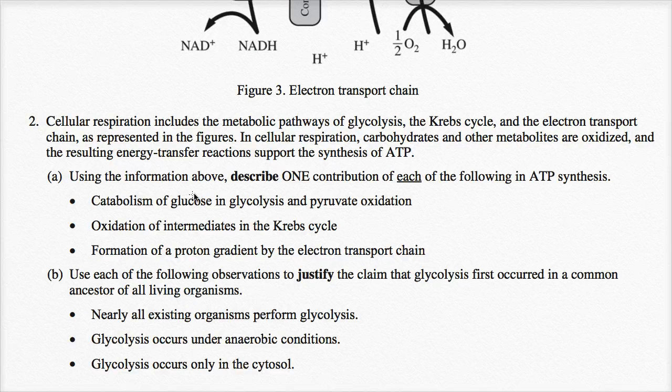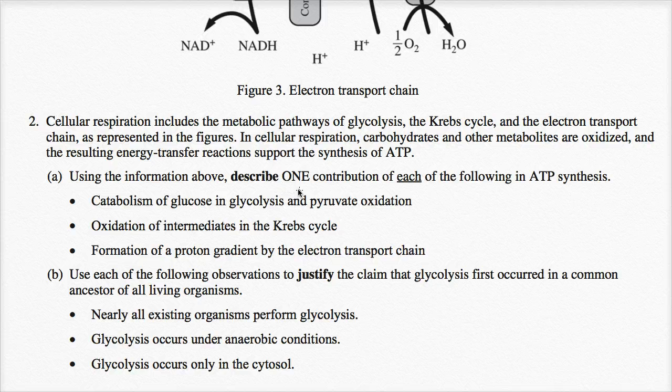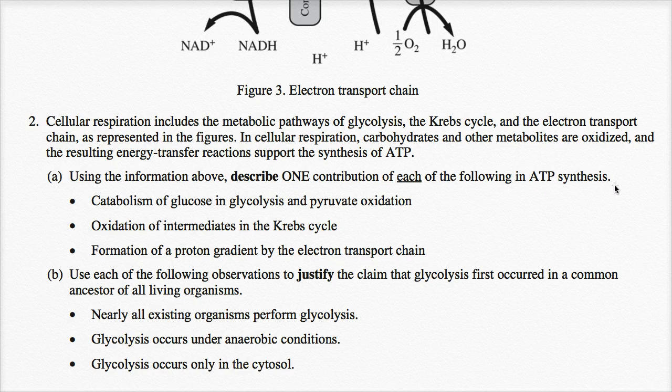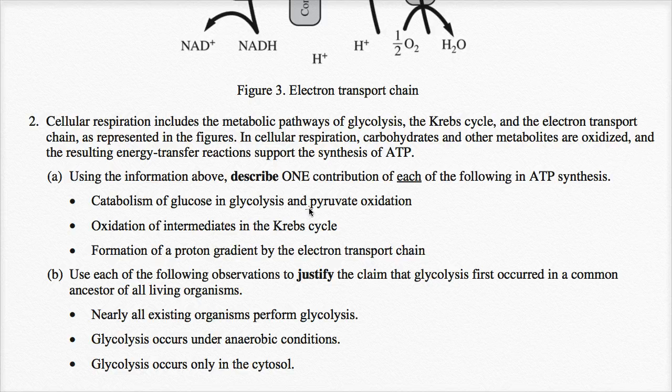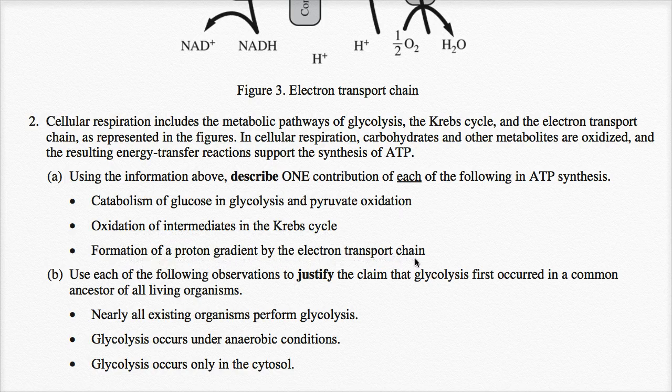All right, using the information above, describe one contribution of each of the following in ATP synthesis. The first one: catabolism of glucose in glycolysis and pyruvate oxidation. The second one is oxidation of intermediates in the Krebs cycle. And the third one is formation of a proton gradient by the electron transport chain.